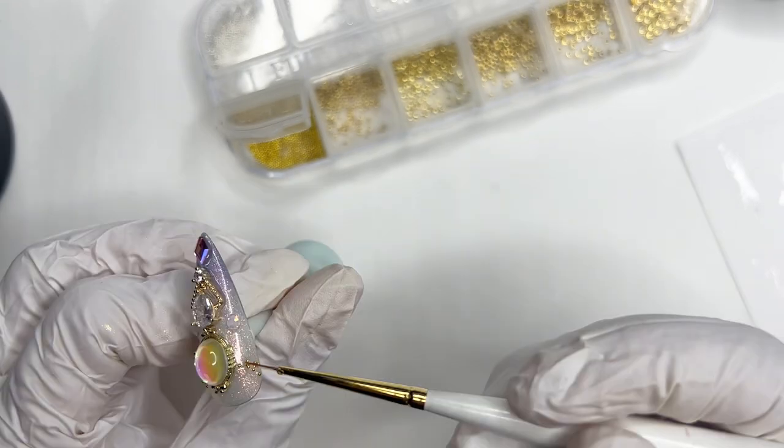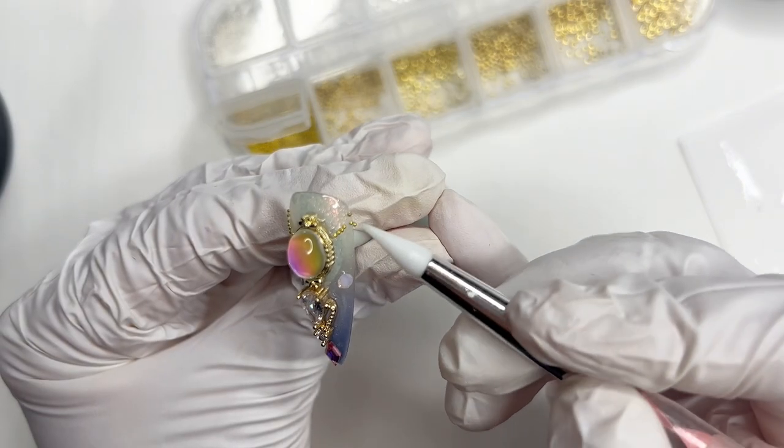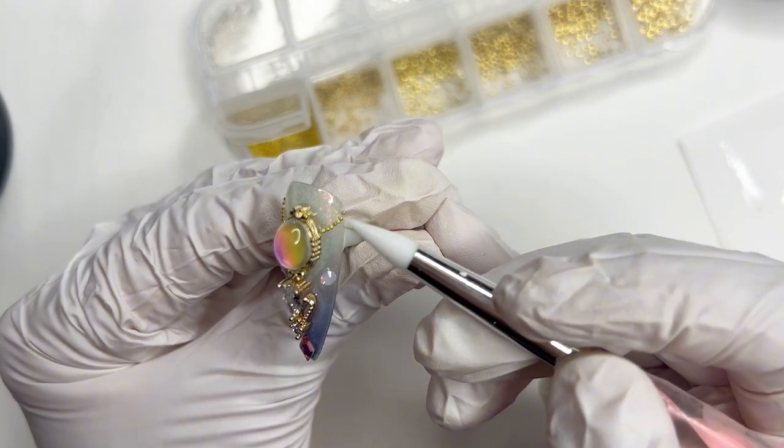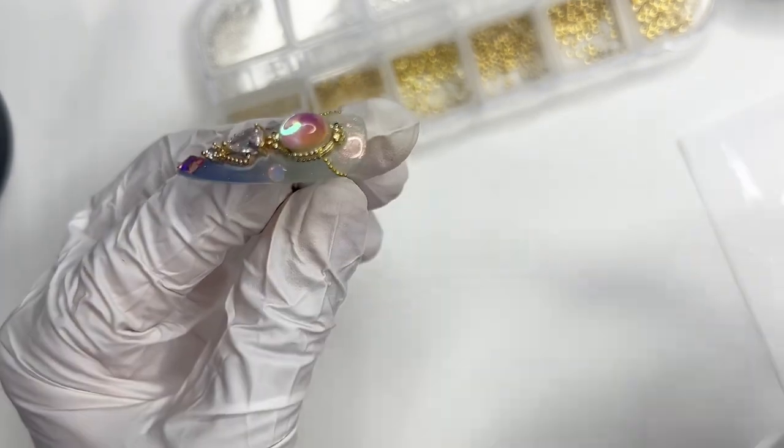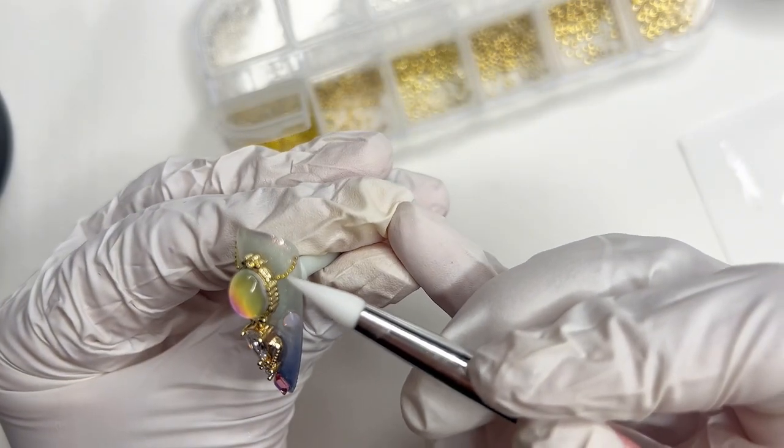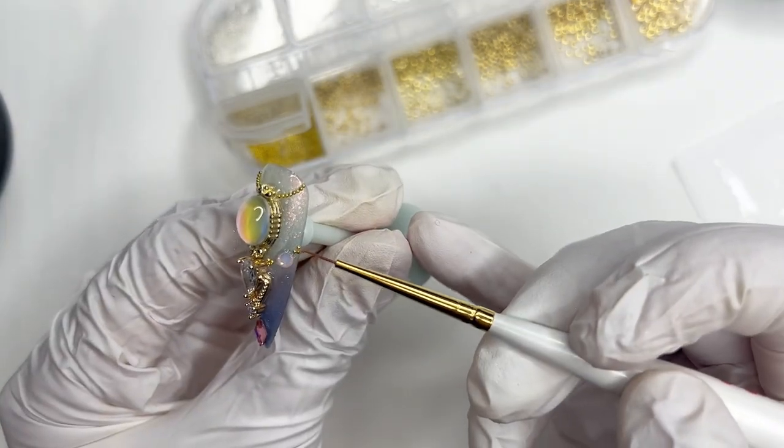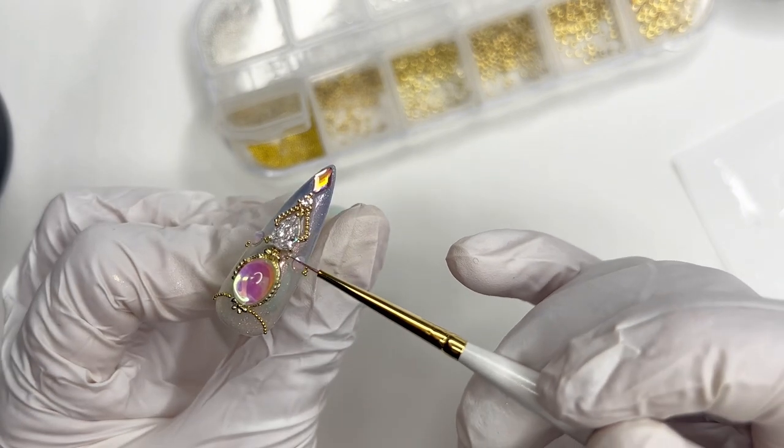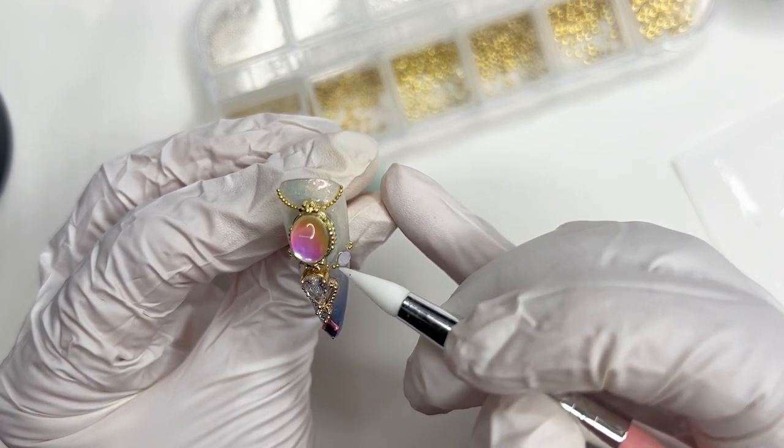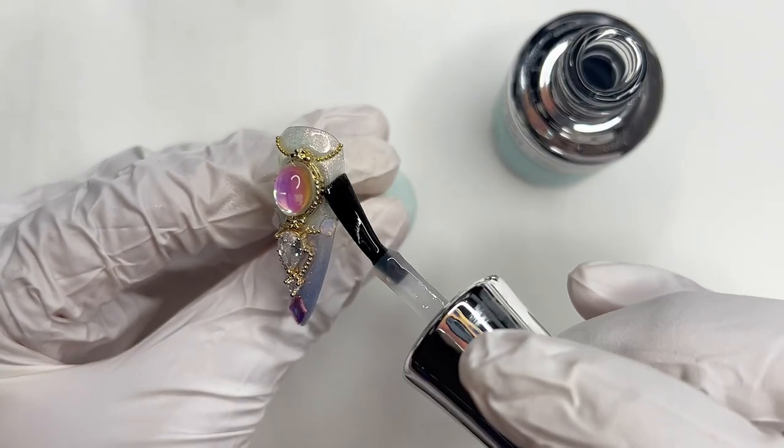I like to use a liner brush to kind of just dump a bunch of beads on and then use a silicone tool to go back and put them in place. And then I'm going to do the same around the gems to basically connect it to the main piece. And this is our thumb design. Now, don't forget to topcoat everything.